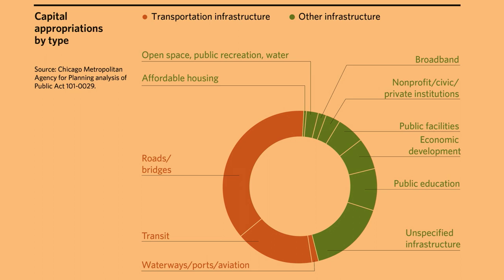In the bottom corner there's a category called 'unspecified infrastructure' — those broad buckets of funds; some could be used for transportation so they might shift to the orange side, but we just don't have that information now. For folks who've been looking at Rebuild Illinois since it passed in the summer, my guess is this might be one of the more granular breakdowns of the bill you've seen — and that's because the bill in its current form is really difficult to use. It's probably the hardest donut chart I've ever made.